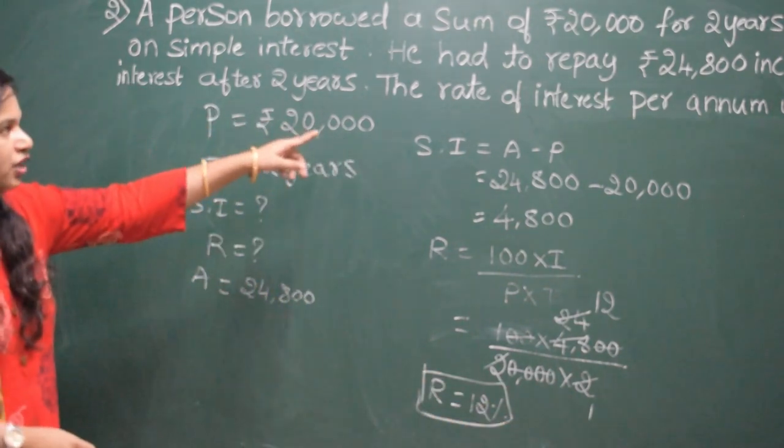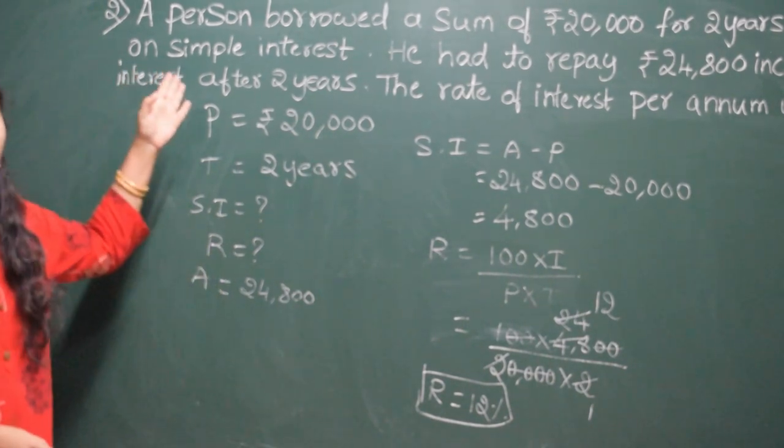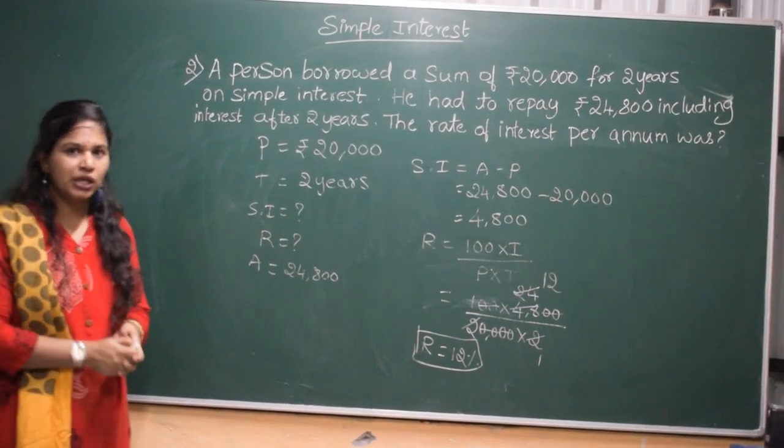The rate of interest per annum was 12%. Like this way, you can solve the simple interest problem. In next class, I will show you another problem. Thank you.